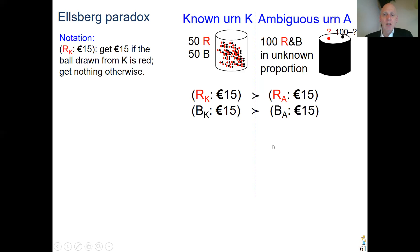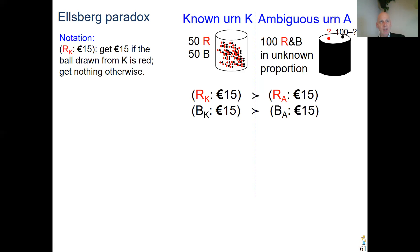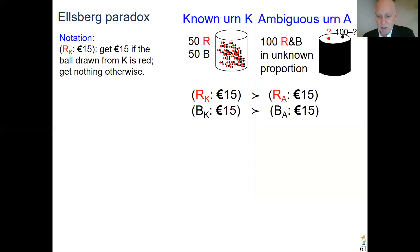These two preferences, as simple as they are, are already enough to falsify expected utility — and more seriously, every model that uses probability in any traditional sense. I'll explain how that works.